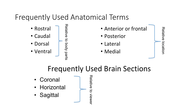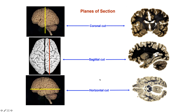To summarize: rostral, caudal, dorsal, and ventral are terms relative to body parts, while anterior, posterior, lateral, and medial are relative to location. For example, the frontal lobe is more anterior than the temporal lobe because it's a bit more towards the front. The frequently used brain sections are: coronal — split front to back; horizontal — split top to bottom; and sagittal — split side to side. These are relative to the viewer.